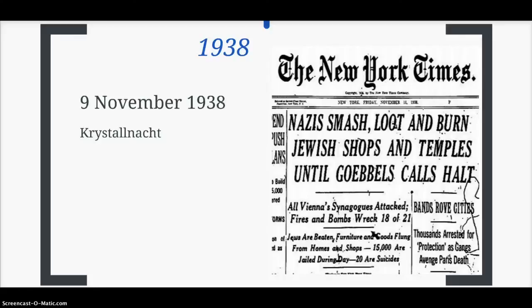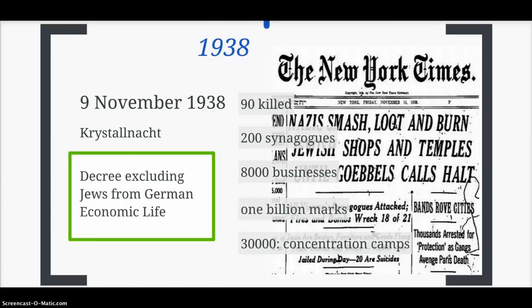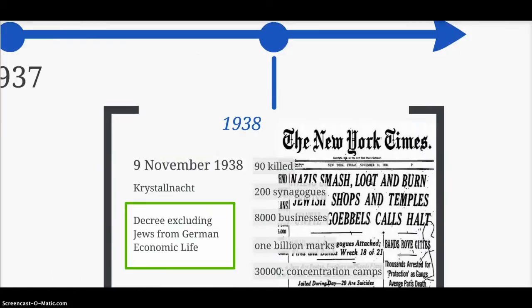Goebbels saw an opportunity after the murder of a German diplomat in Paris by a young Jewish man. On the 9th of November, Kristallnacht took place — propaganda on the radio encouraged mass violence towards Jewish people and businesses. That night, 90 people were killed, 200 synagogues burned down, and 8,000 businesses destroyed. To add insult to injury, the Jewish community was forced to pay a billion marks to the German state as recompense. 30,000 Jewish people were sent to concentration camps. A further decree in 1938 excluded Jews from German economic life, depriving them of legitimate means of livelihood.